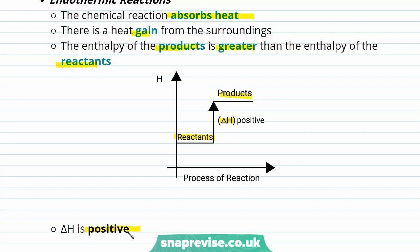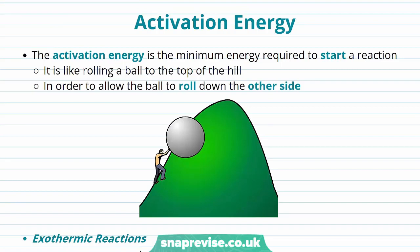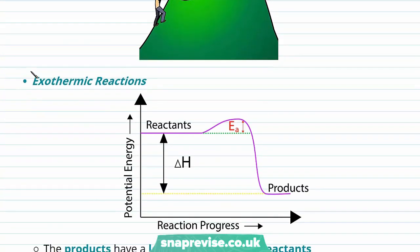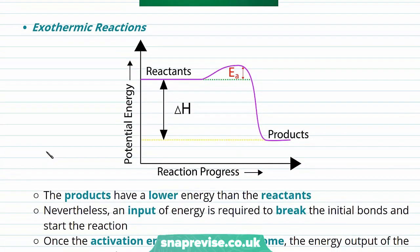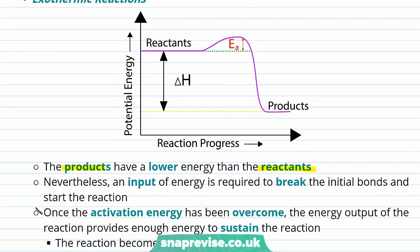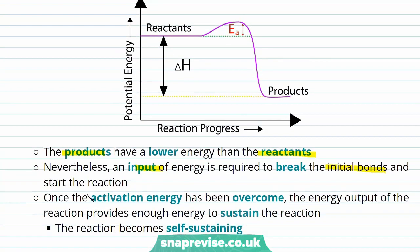Now let's take a quick look at activation energy — a concept you may have come across before. The activation energy is the minimum energy required to start a reaction; it's like rolling a ball to the top of a hill in order to allow it to roll down the other side. Looking at the enthalpy profile diagram of our exothermic reaction, the products have a lower energy than the reactants, but an input of energy is required to break the initial bonds and start the reaction. Once the activation energy — symbolised by Ea — has been overcome, the energy output sustains the reaction and it becomes self-sustaining.